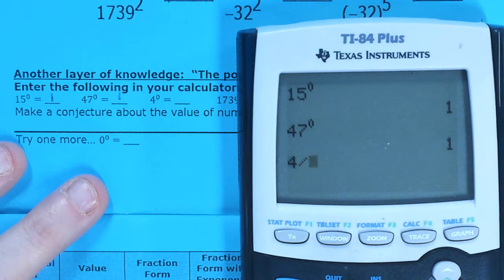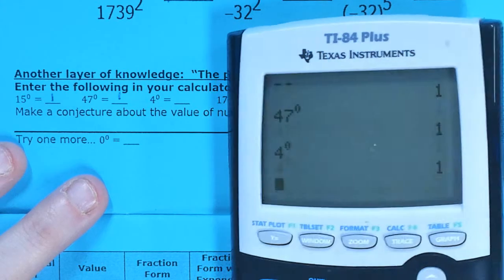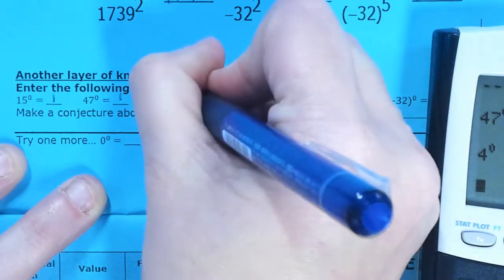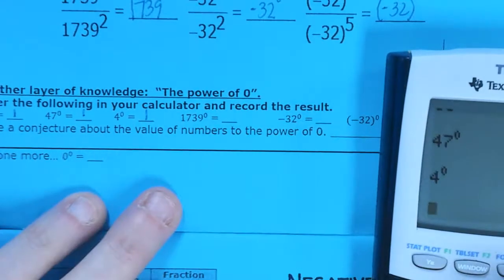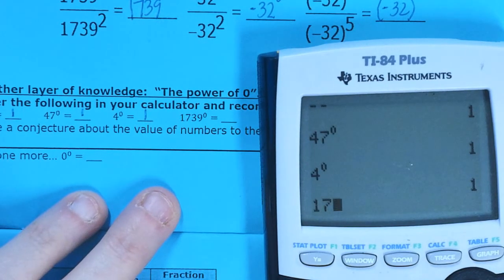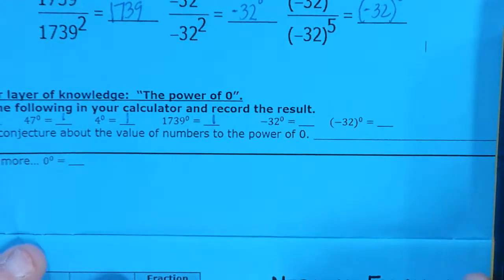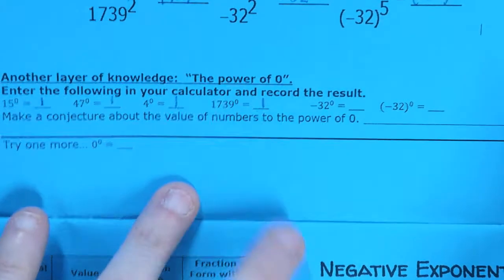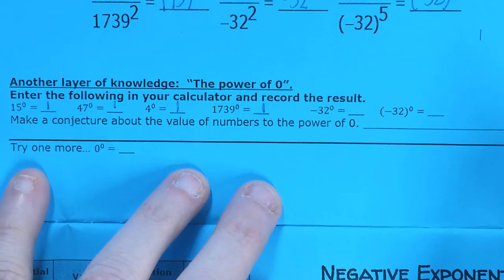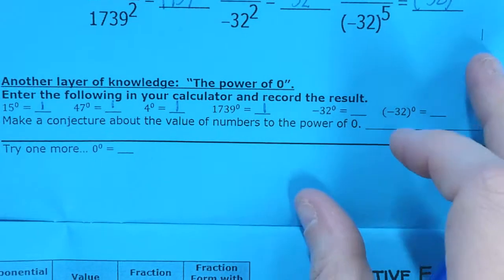47 to the 0 power gives me 1. Interesting. 4 to the 0 power also gives me 1. Are you seeing a pattern here? What do we think 1739 to the 0 power is going to give us? Well, if you said 1, you were right.